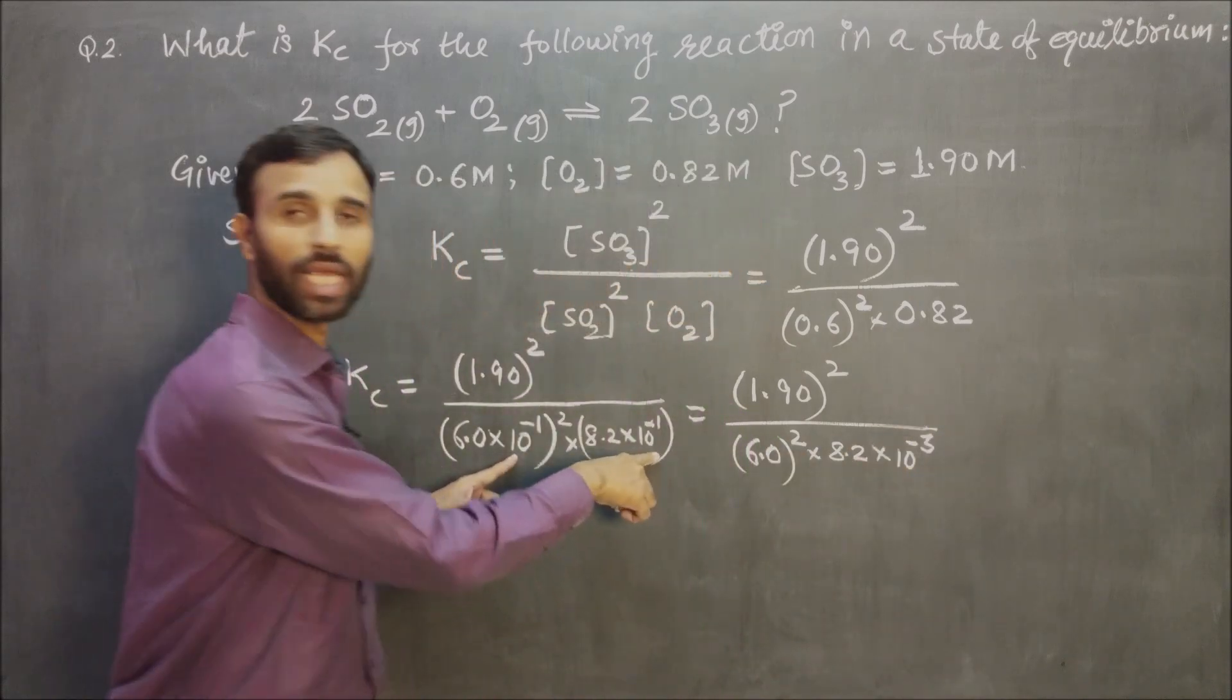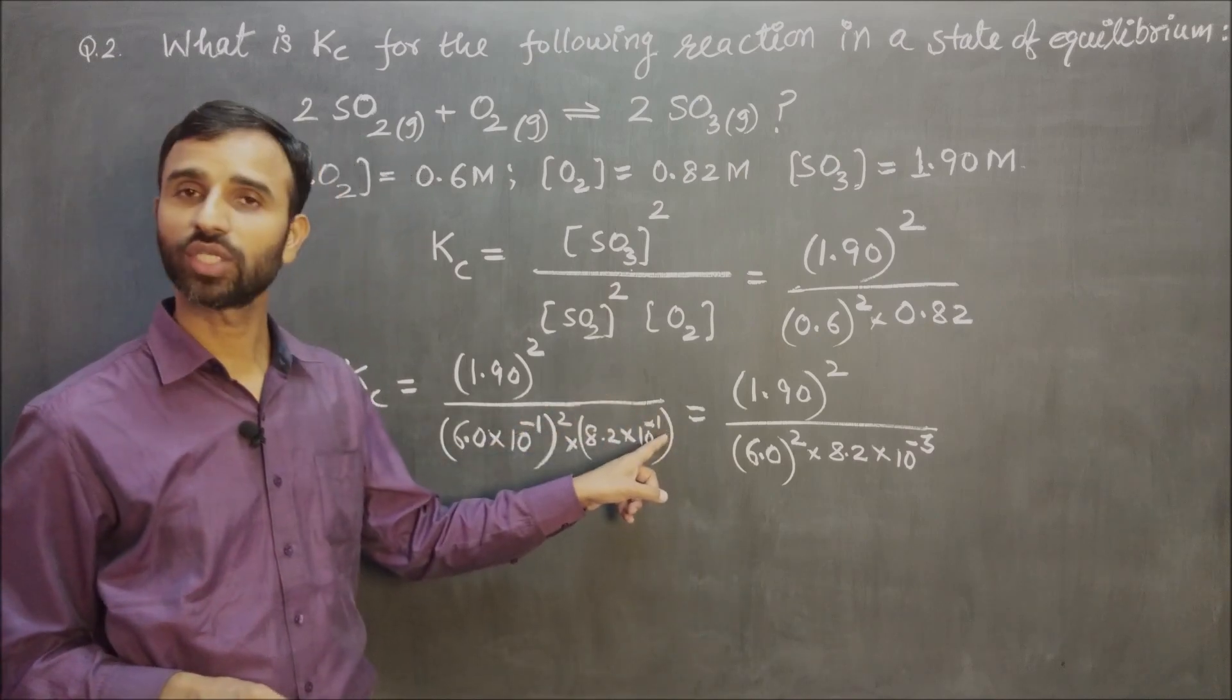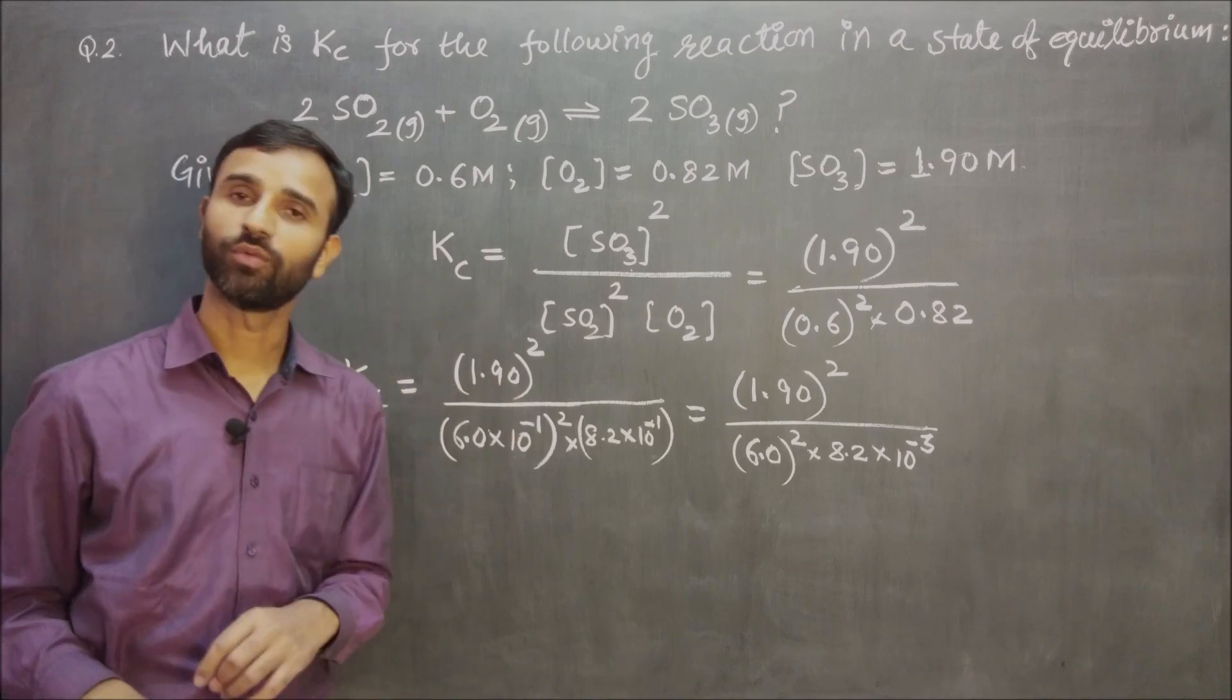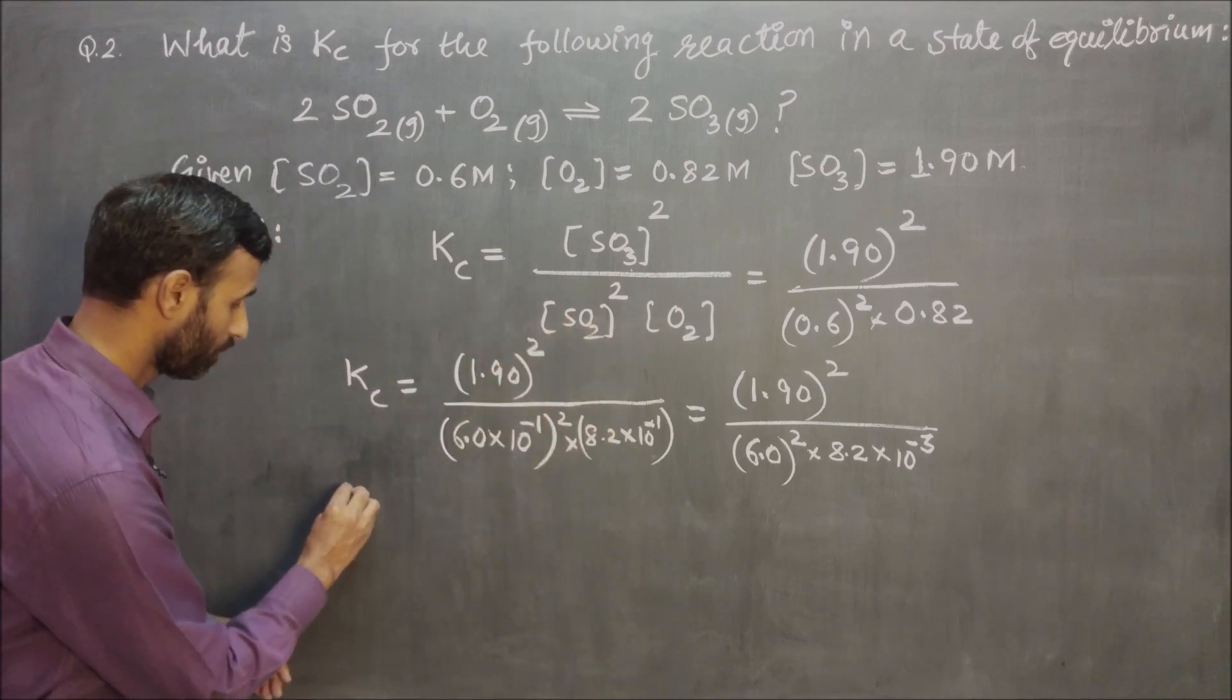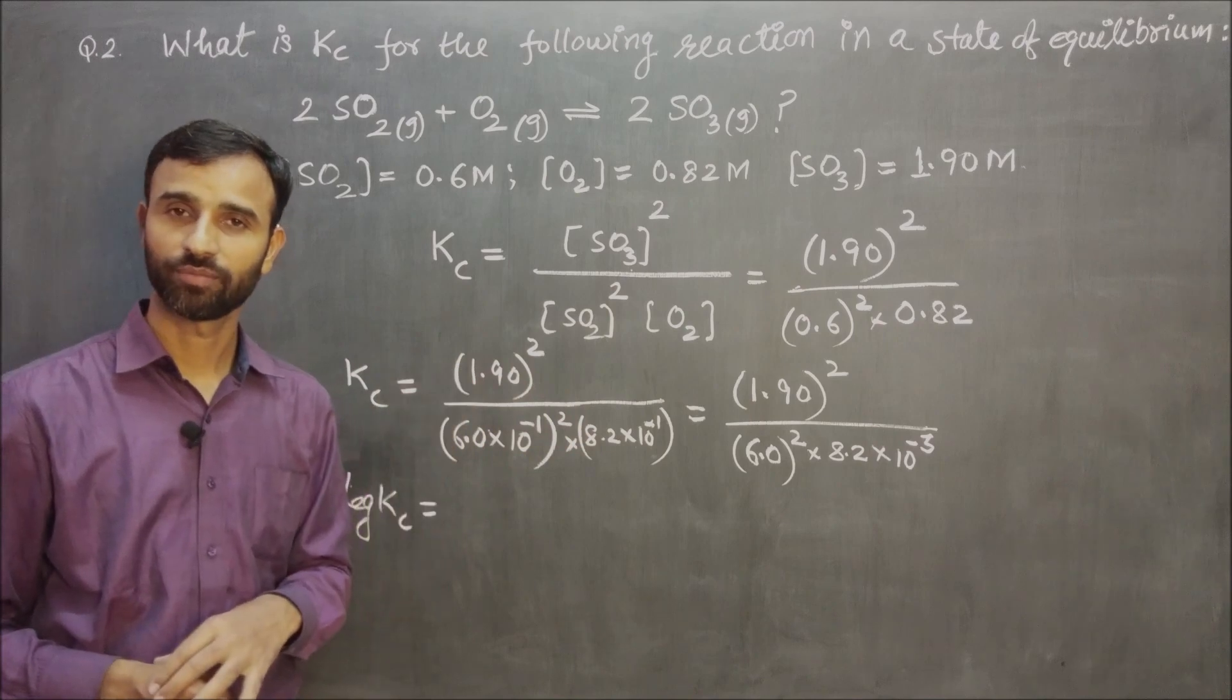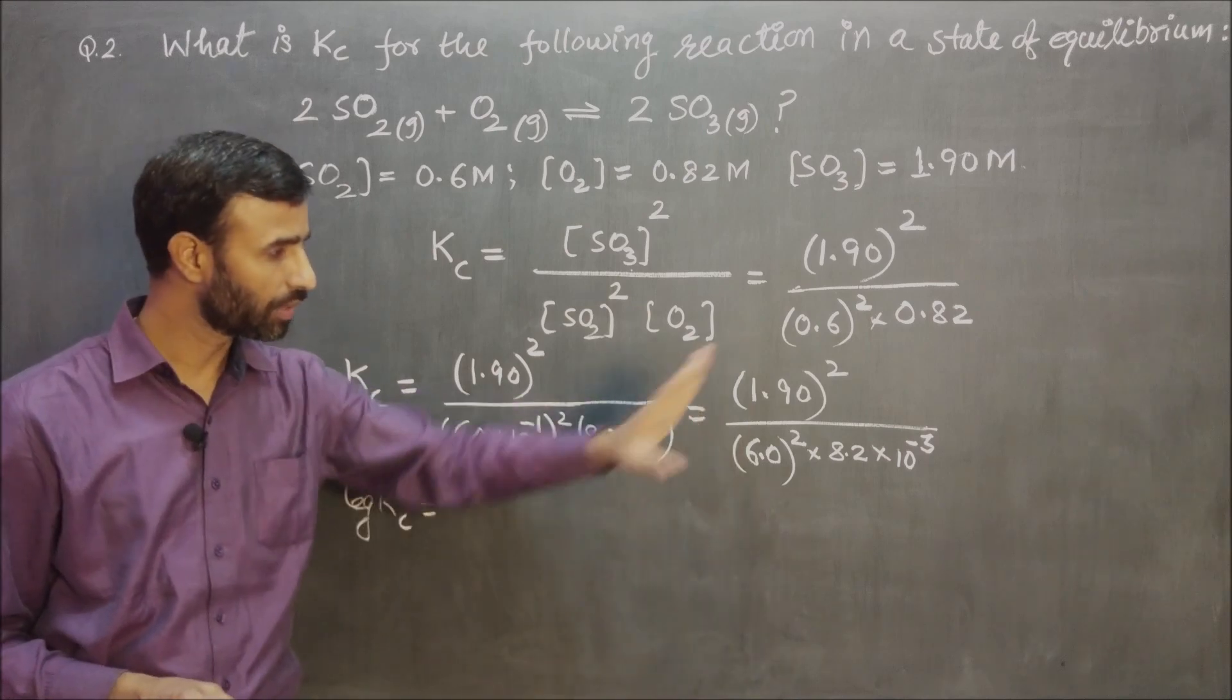Because if the base is the same and you multiply, then the powers are added. So here minus 2, here minus 1. So what is 10 to the minus 3? Now what do I do? So I am taking log on both sides. Log of Kc. Because if you want exact value, then you have to go to log. If you want approximate, then it's okay. You can simply multiply and see. But I am doing log.